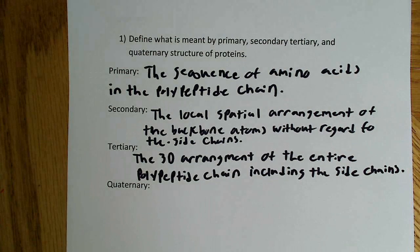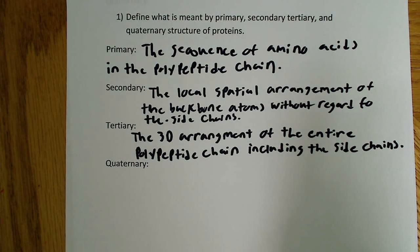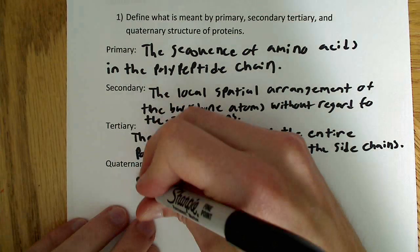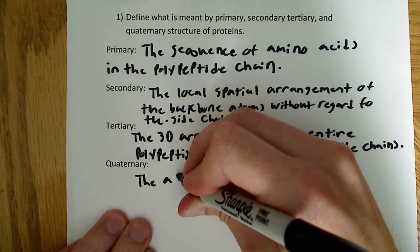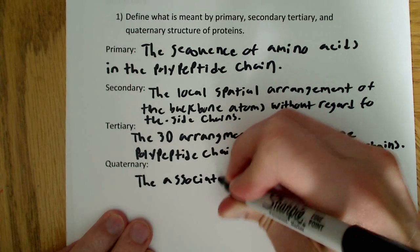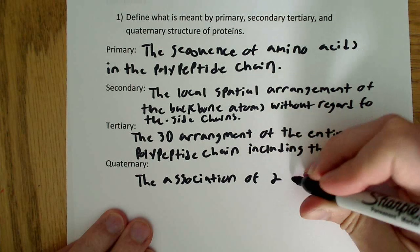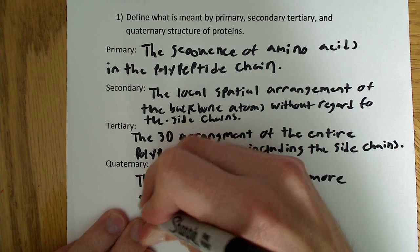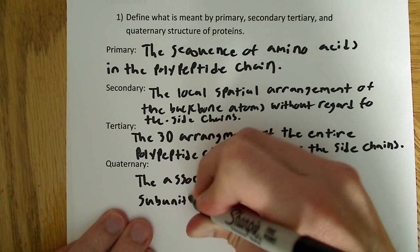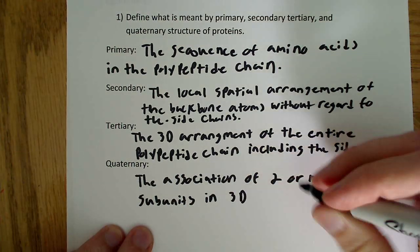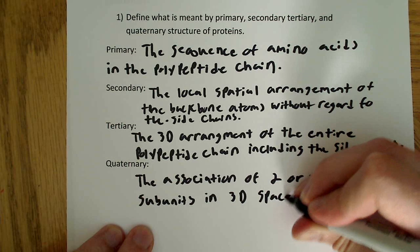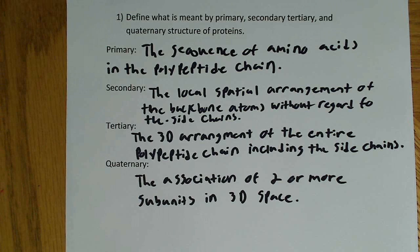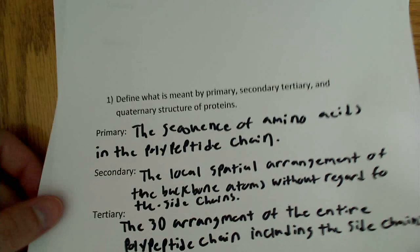The last one to define is quaternary structure. The quaternary structure of proteins is the association of two or more subunits in three-dimensional space.